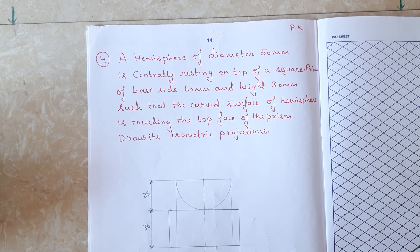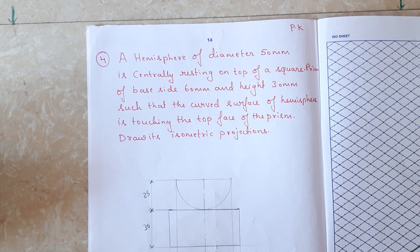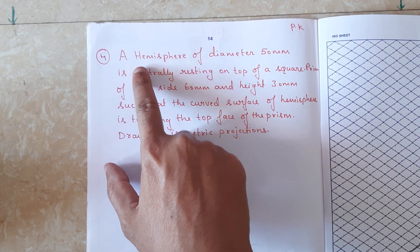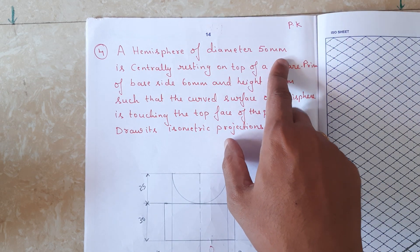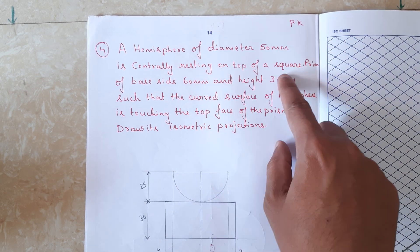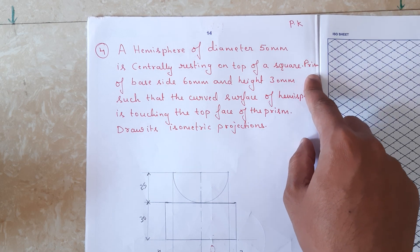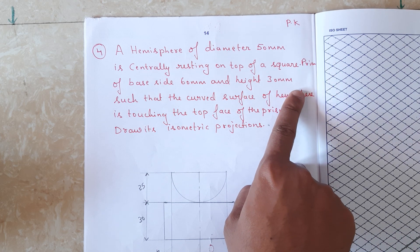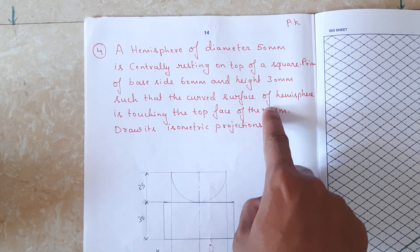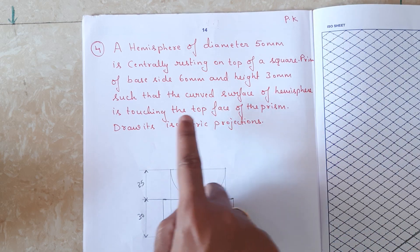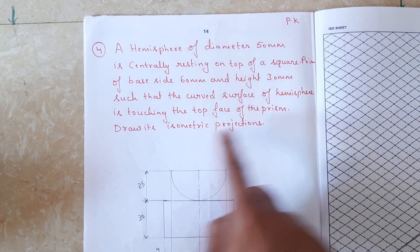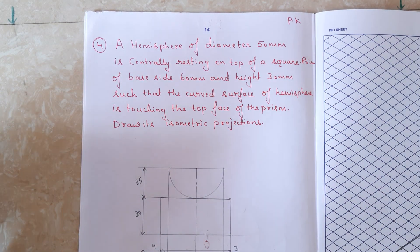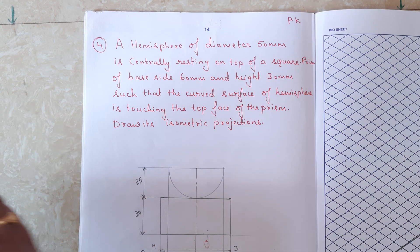Hello friends, Namaste. We are back with another problem. The problem statement is: a hemisphere of diameter 50 mm is centrally resting on top of a square prism of base 60 mm and height 30 mm, such that the curved surface of the hemisphere is touching the top face of the prism. Draw its isometric projection.